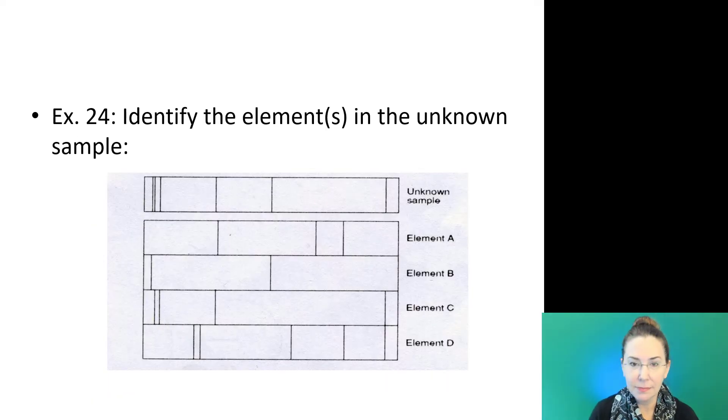Here's one for you to try. We have an unknown sample at the top. There are four elements underneath. Which of those four elements appear in the unknown sample? In this case, the elements that appear in the unknown sample are elements B and C. If we look at element B and element C, all of their bands also appear in the unknown sample. If we look at element A and element D, their bands do not all appear, and thus they cannot be part of that mixture.